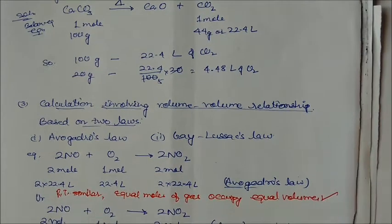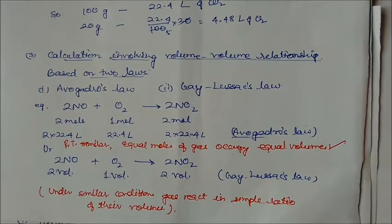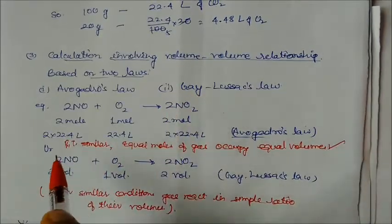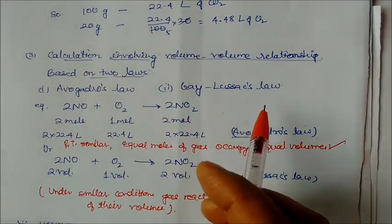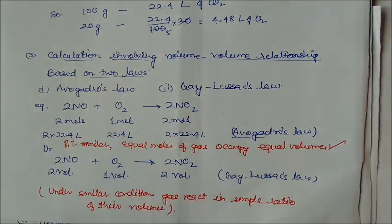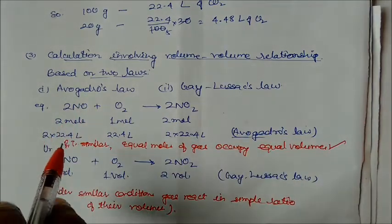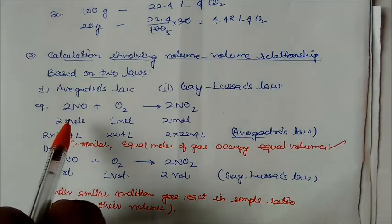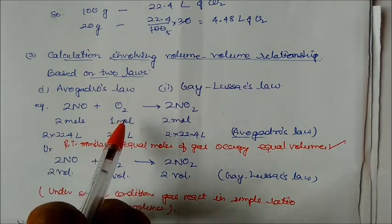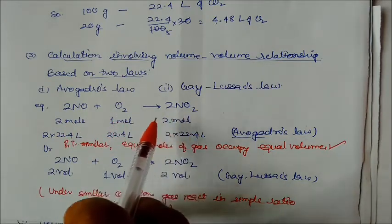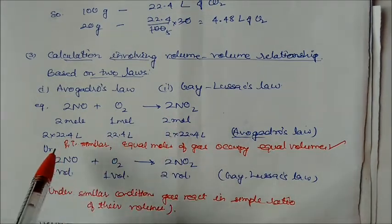The third concept is calculation involving volume-volume relationships, based on two laws: Avogadro's law and Gay-Lussac's law. Example equation: 2NO + O₂ → 2NO₂. This is 2 moles, 1 mole, and 2 moles respectively. In terms of volume: 2 × 22.4 liters, 1 × 22.4 liters, and 2 × 22.4 liters.